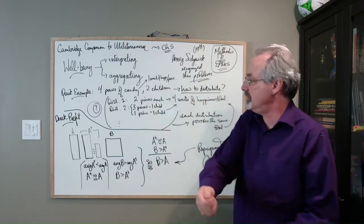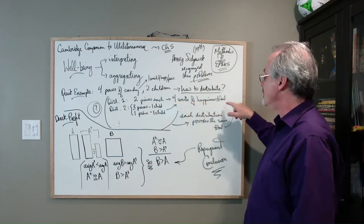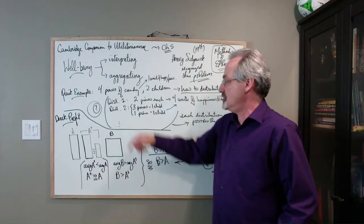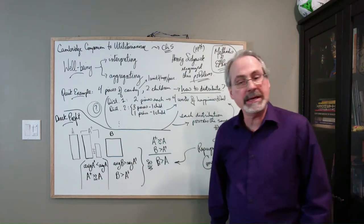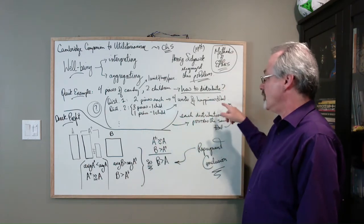So there are various ways you can distribute it while preserving the totality. Distribution one, you might give two pieces each. Well, that's going to give the group four units of happiness total. Distribution two, you might give one kid three, and the other kid one, and that too will produce four units of happiness.